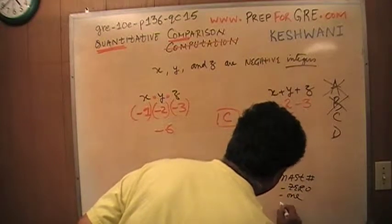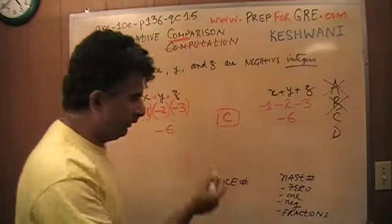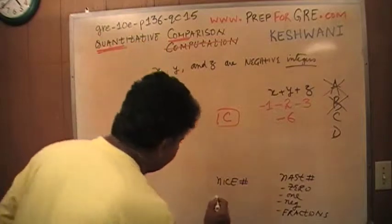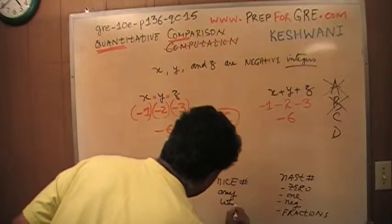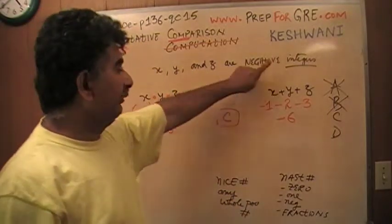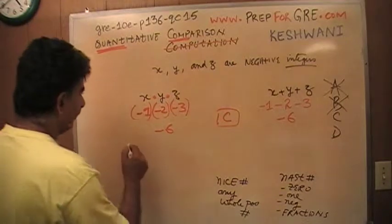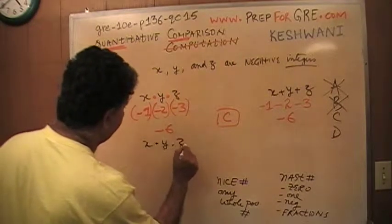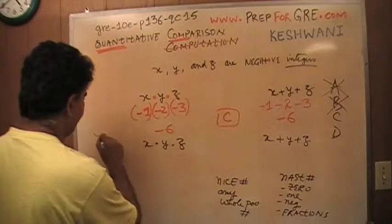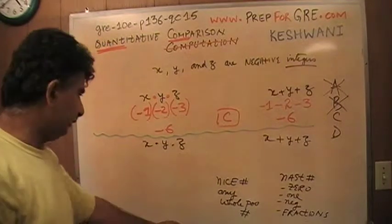We cannot plug in 0 because they have to be negative integers. I'm going to try negative 1 and see what happens. Let's plug in negative 1. So here is x times y times z, and here is x plus y plus z. If the answer stays the same, we'll see. If the answer changes, we'll see.